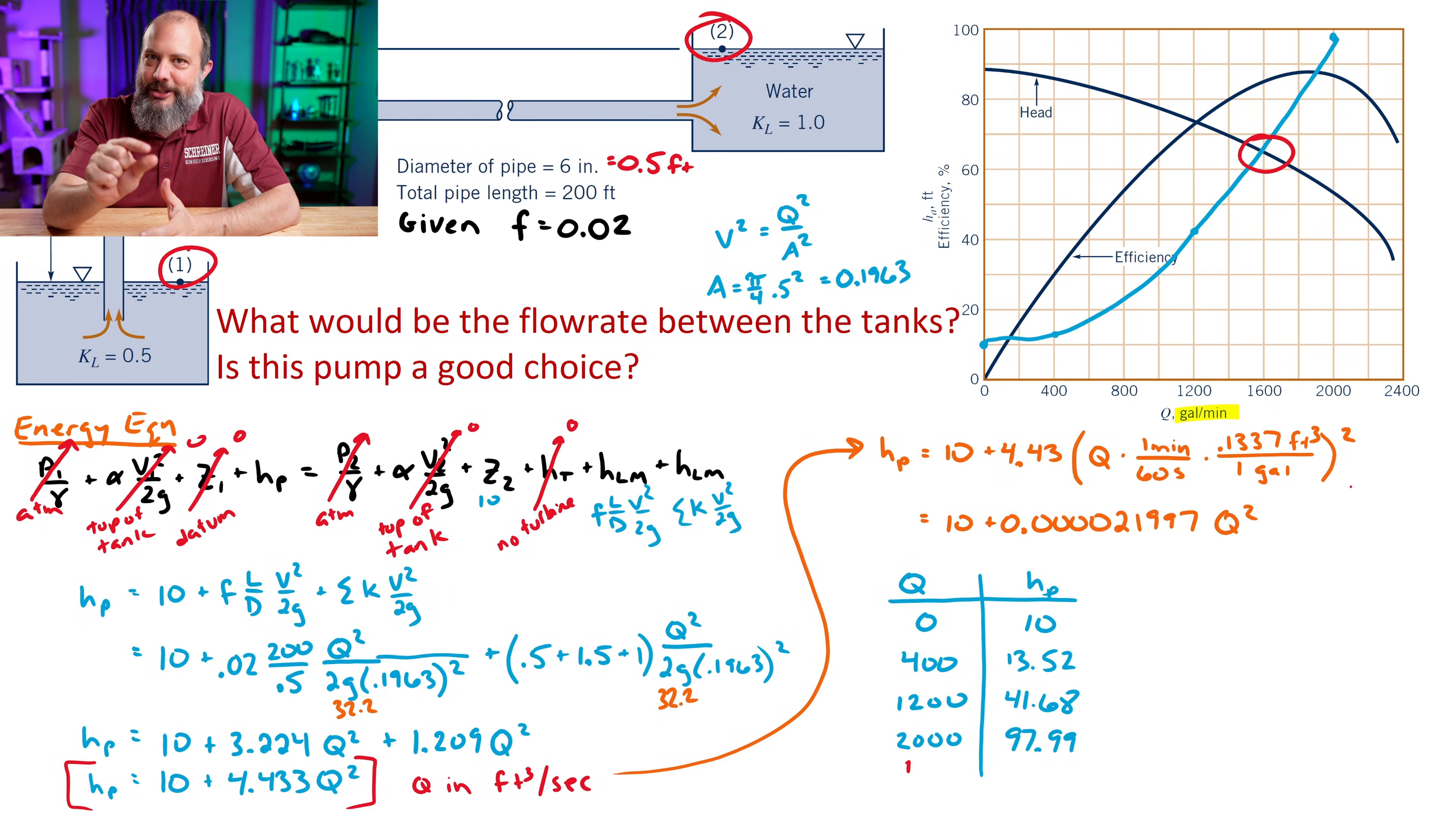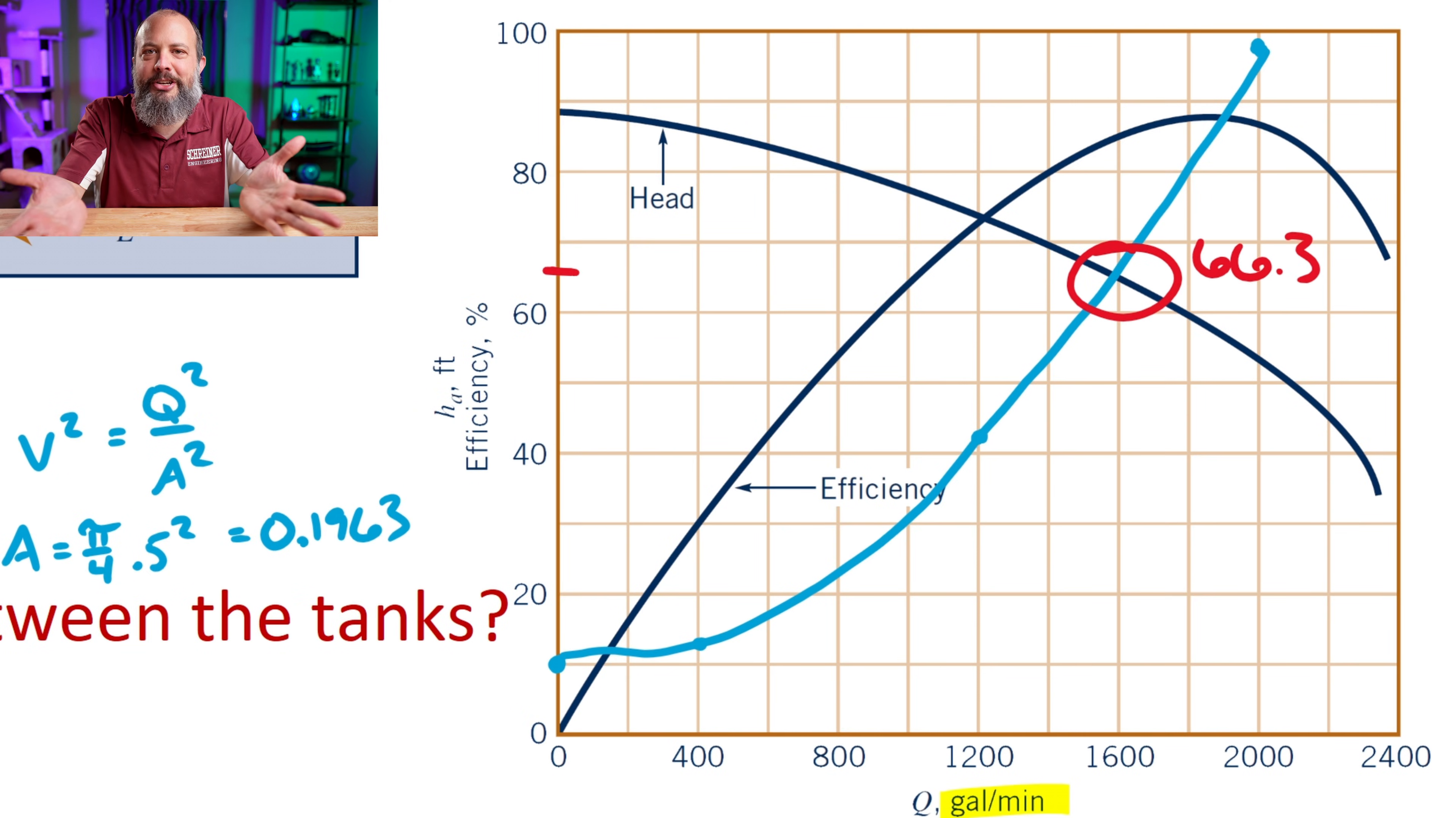So I want to plot one more point that's actually really close to the curve to make sure that my drawing is actually good. And we get that at a flow rate of 1,600, we get 66.3 for the pump head. And that looks about right. So this is a pretty good guess. Flow rate of 1,600.